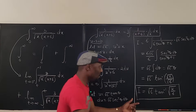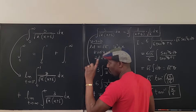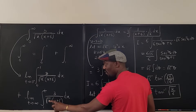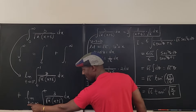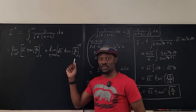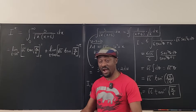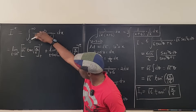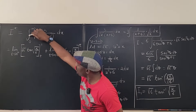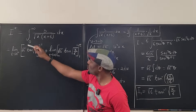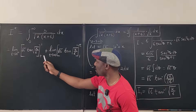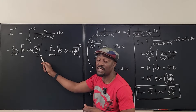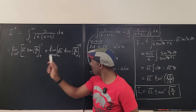Because it's a definite integral, we now evaluate this antiderivative: for the first part, from t to 1, taking the limit as t goes to 0 from the right; and for the second part, from 1 to t, taking the limit as t goes to infinity. We're going from 0 to 1, then from 1 to infinity, but replacing the problematic endpoints with t and taking limits.